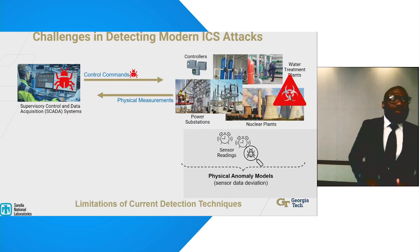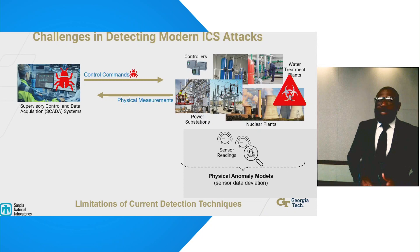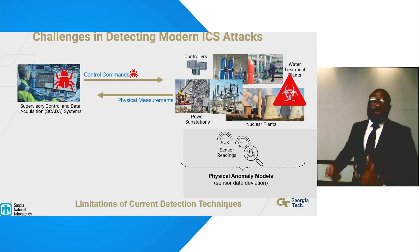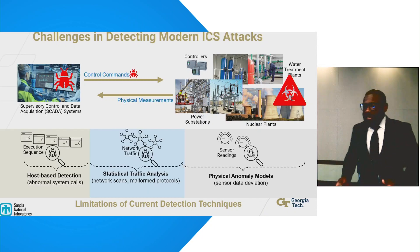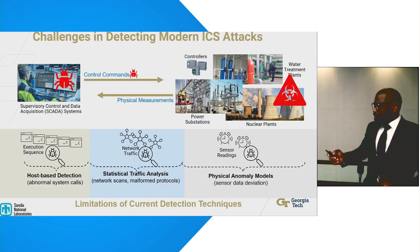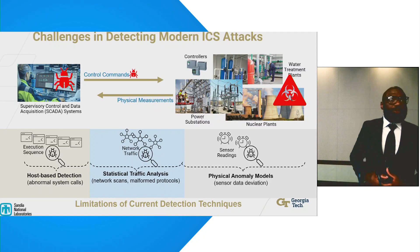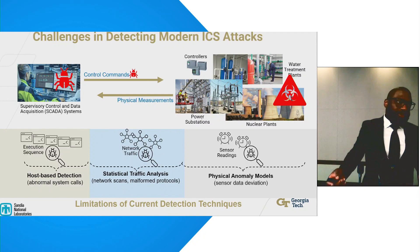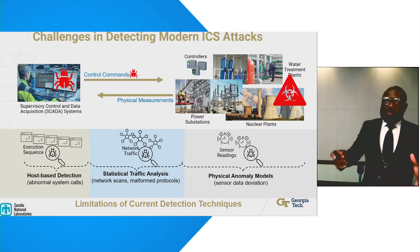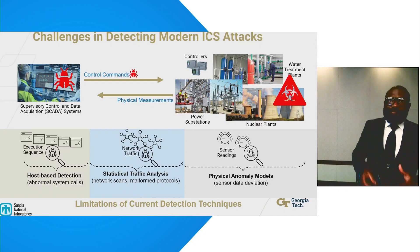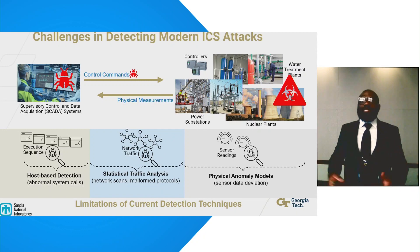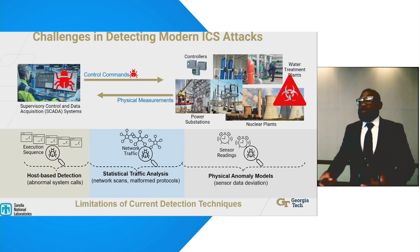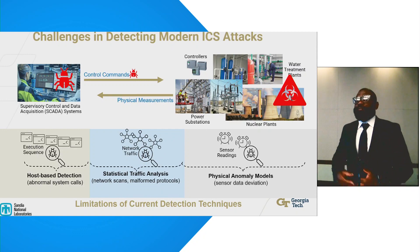Existing techniques to detect ICS attacks are largely grouped into three. First, physical anomaly models can identify anomalous sensor readings. However, because these techniques have largely focused on the physical after-effect of the attack, they raise false alarms from benign physical anomalies like faults and errors.